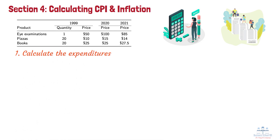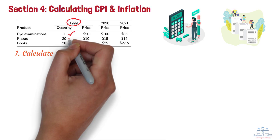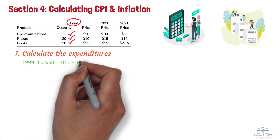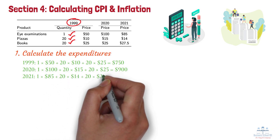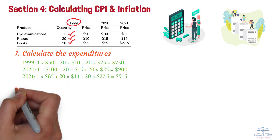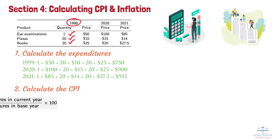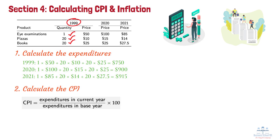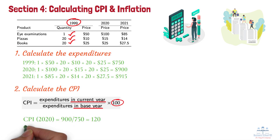Number 1: Calculate the Expenditures. Suppose that during the base year 1999, a survey determines that each month a typical family purchases 1 eye examination, 20 pizzas, and 20 books. At 1999 prices, a family must spend $750 to purchase this market basket. Number 2: Calculate the CPI. The CPI for every year after the base year is determined by dividing the expenditure necessary to purchase the market basket in that year by the expenditure required in the base year, then multiplying by 100. Note that the quantities purchased in 2020 and 2021 are irrelevant because we assume households buy the same market basket each month. Using the numbers in the table, the CPI for 2020 and 2021 equals 120 and 122, respectively.